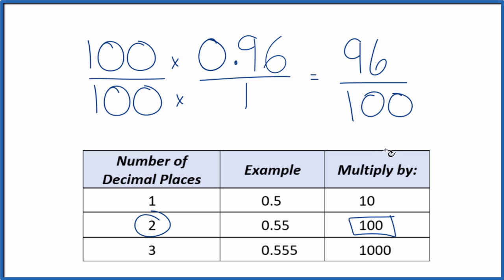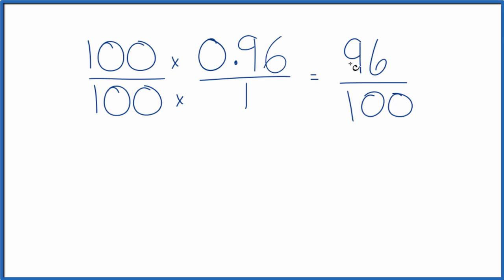And now we have a fraction. But we can simplify this further, since these are both even. Let's give ourselves some room. So if we divide 96 by 2, we get 48. And if we divide 100 by 2, we get 50. So we've simplified this down to 48 50ths.